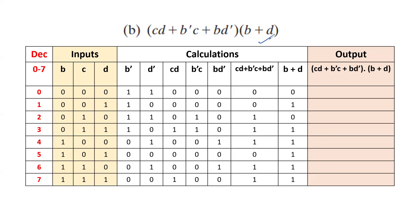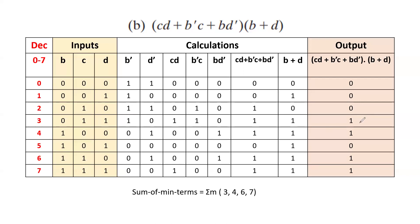Next we find B+D — ORing of B and D. When both inputs are 0, the output is 0. Then we find the ANDing between these two sum terms, focusing only on those two columns. ANDing means when both inputs are 1, the output is 1. In these four cases only we have outputs of 1; the remaining cases have output 0. Now we write the sum of minterms: the decimal equivalents where output is 1 are 3, 4, 6, 7. Similarly, the remaining decimal equivalents are maxterm numbers: 0, 1, 2, 5.